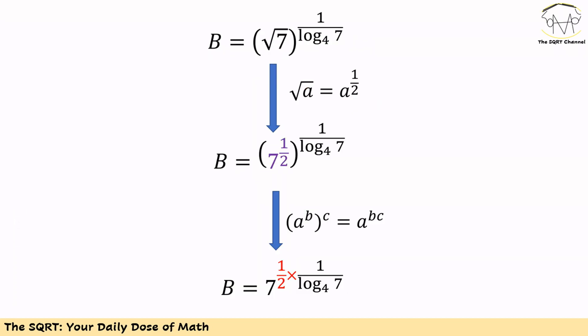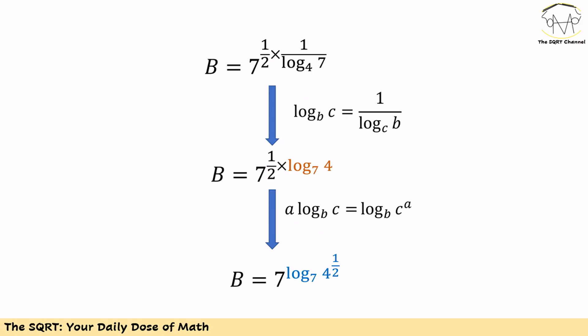Now let's move to the second term. We have a square root of 7 to the power of 1 over log of 7 in base 4. First, we use square root of A equals A to the power of 1 over 2. Then we use the rule that A to the power of B, the whole expression to the power of C, equals A to the power of BC. So we multiply 1 over 2 by 1 over log of 7 in base 4. Using 1 over log of B in base C equals log of C in base B, the expression simplifies to 7 to the power of 1 over 2 times log of 4 in base 7.